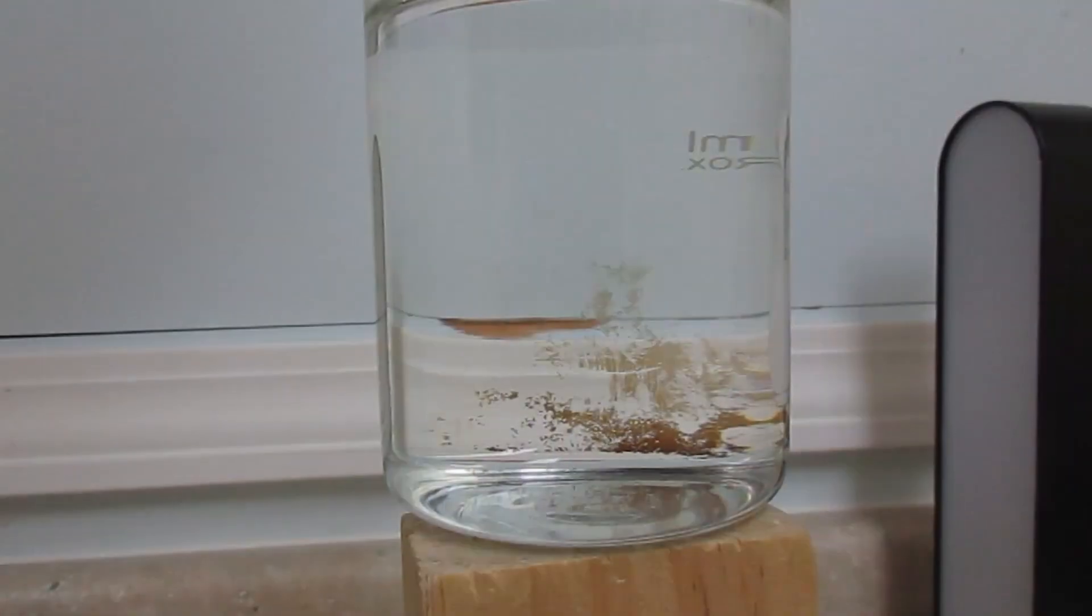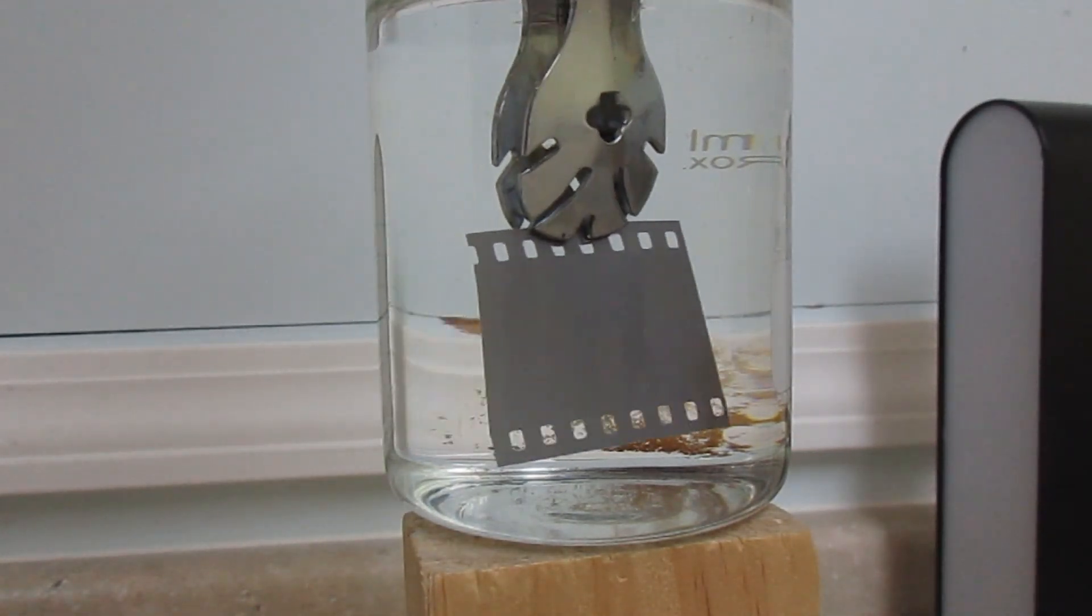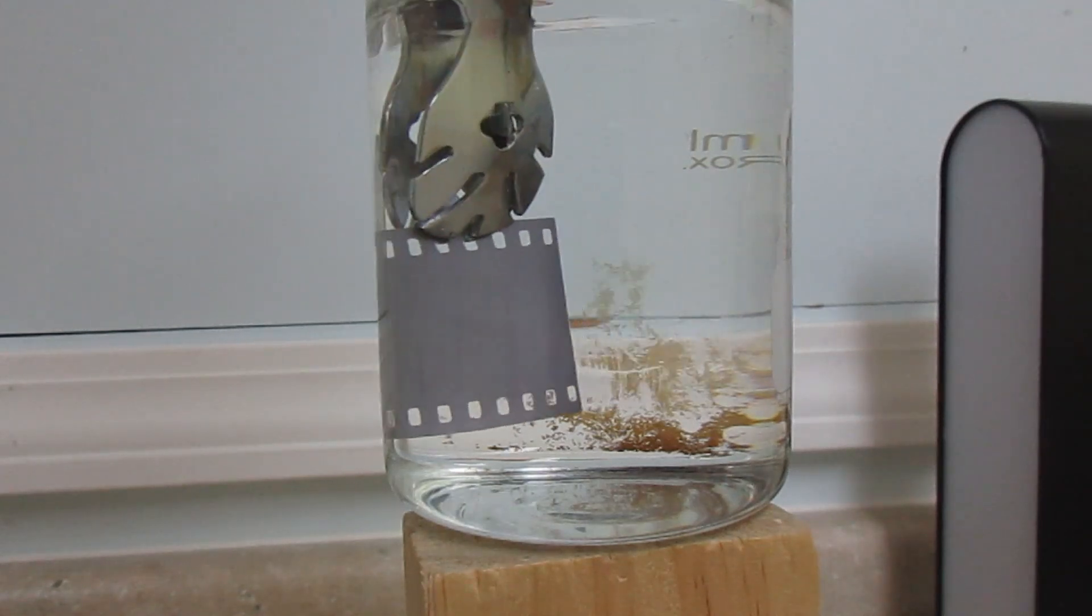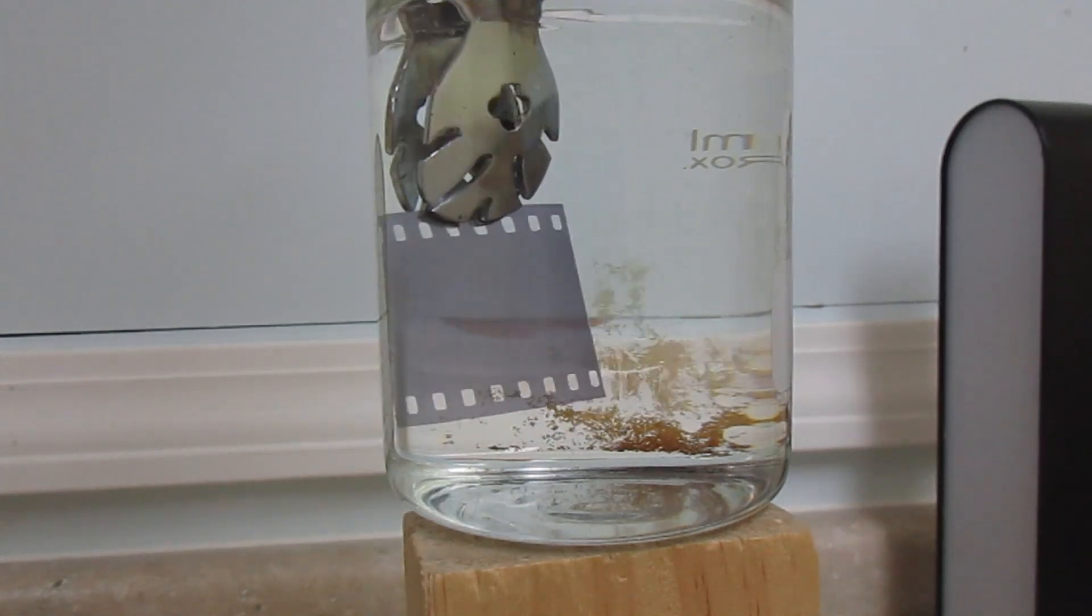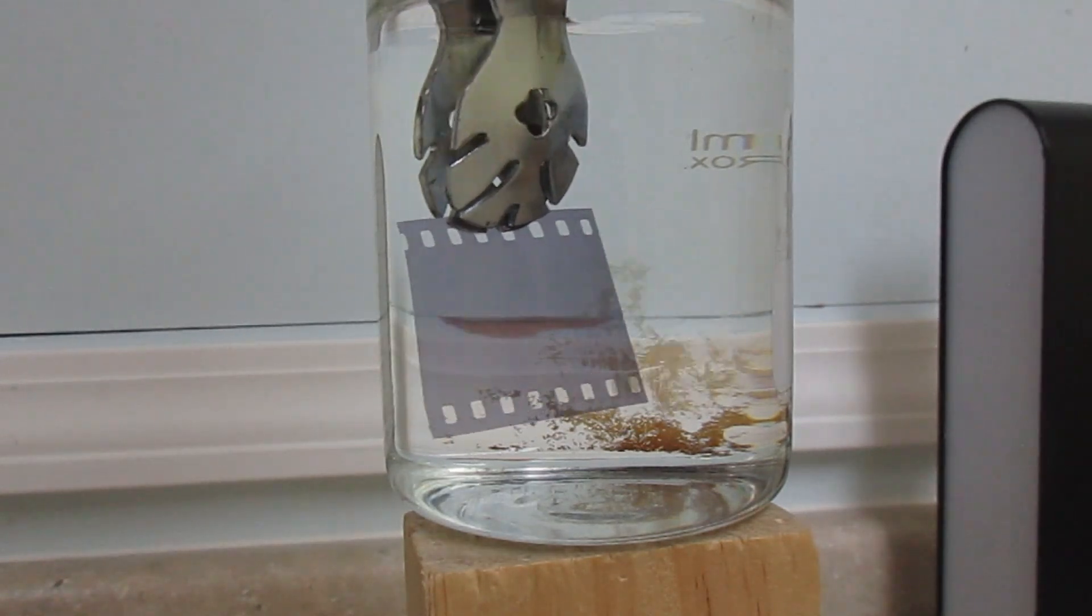and the developer grows that seed, and makes the whole crystal into silver, and that means it's opaque. And then the fixer washes away all the silver halides, but not the silver, making it so that anything that didn't get developed is clear, and anything that did get developed due to getting hit with light is opaque, making a negative.